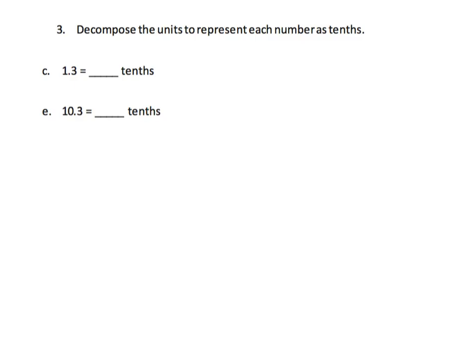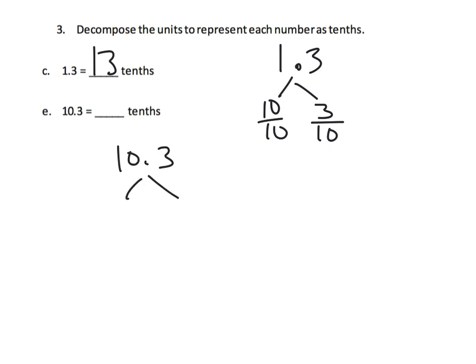Now we're removing the scaffolding and allowing students to choose either the area model or place value discs. To convert 1.3 into tenths: one whole is ten tenths, and 0.3 is three tenths, so that becomes thirteen tenths. For 10.3, ten wholes is a hundred tenths — because each whole number is ten tenths, so ten whole numbers is a hundred tenths — plus three more tenths gives us a hundred and three tenths.